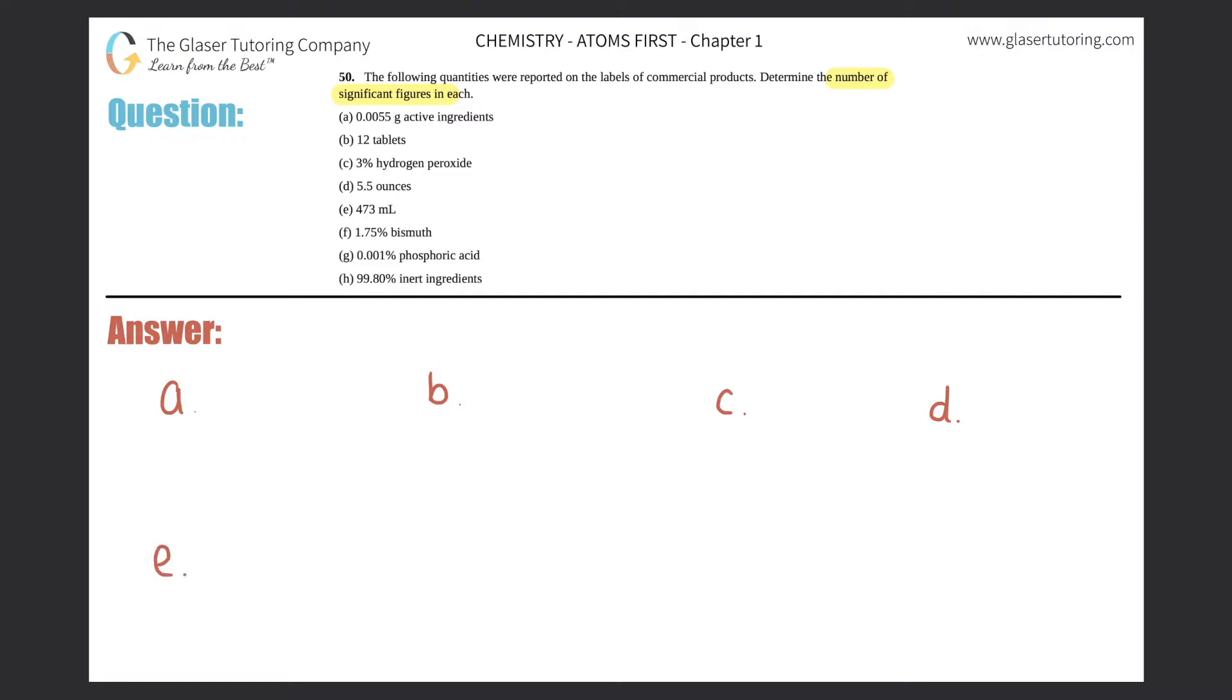With this one, since we've already done two problems, we're just gonna go at it at a much faster pace. For right now I'm just going to label a, b, c, d, e, f, g, and h.